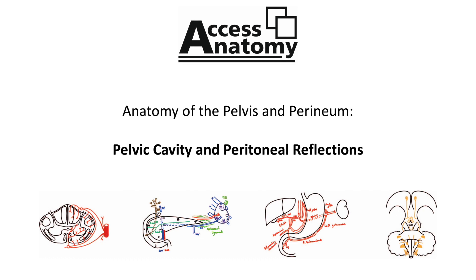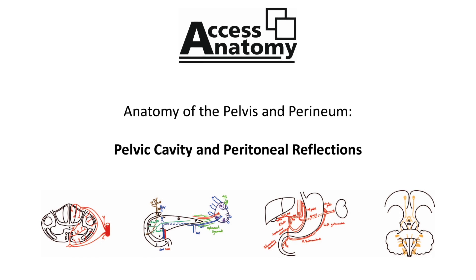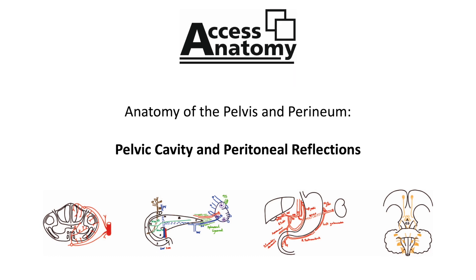This creates the vesicorectal pouch. From here, the peritoneum then extends laterally over the rectum, forming the pararectal fossa on each side of the rectum, and extends superiorly over the rectum to surround the sigmoid colon at the recto-sigmoid junction. The arrangement of peritoneum over the rectum results in the inferior third being completely sub-peritoneal, the middle third being covered only on its anterior surface, and the superior third being covered by peritoneum on both its anterior and lateral surfaces.